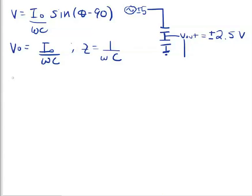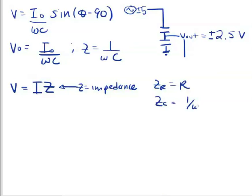So now we can define a generalized form of Ohm's law where V is equal to IZ. And here Z is known as the impedance. The impedance is equal to R for resistors, and the impedance for capacitors is equal to 1 over ωC. But actually, when dealing with complex numbers, the impedance for capacitors becomes 1 over i times ωC. And here the imaginary unit represents the phase difference between the current and voltage. But for our purposes, leaving the imaginary unit out and keeping the phase difference in mind should suffice.